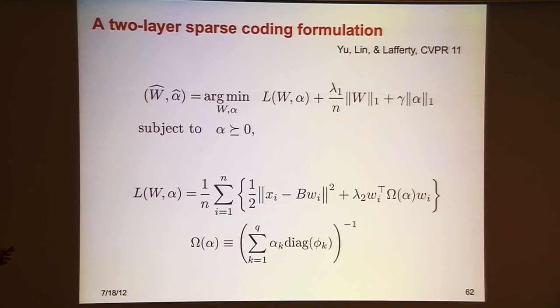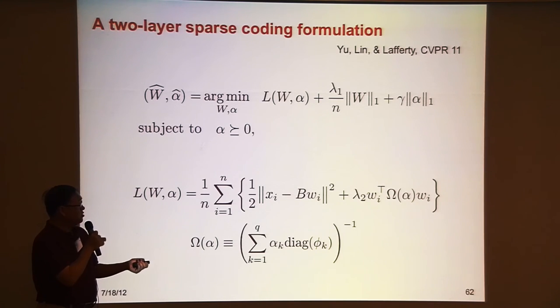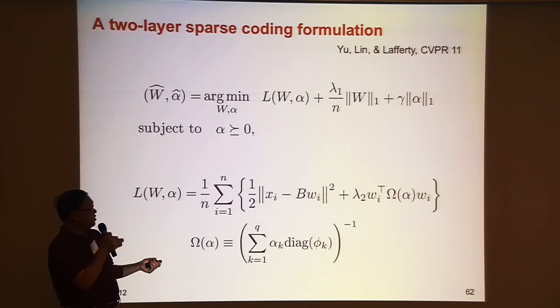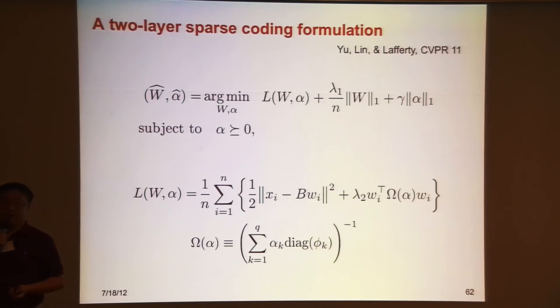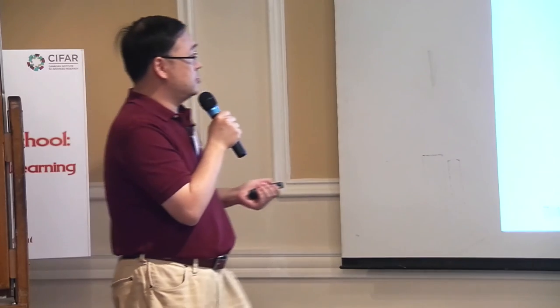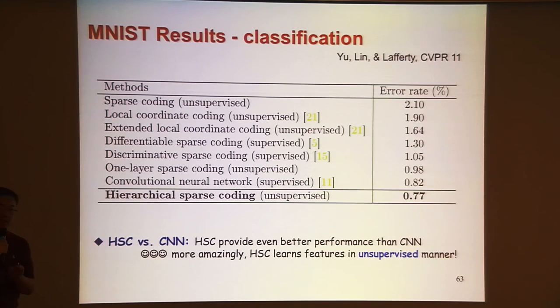One formulation: the loss function has a reconstruction term with a first-layer basis, plus a diagonal matrix in the regularization term. This matrix is itself a sparse combination of a set of second-layer bases. So you have two layers of sparse coding. You can implement this and apply this unsupervised feature training — two-layer sparse coding — on, for example, MNIST data.